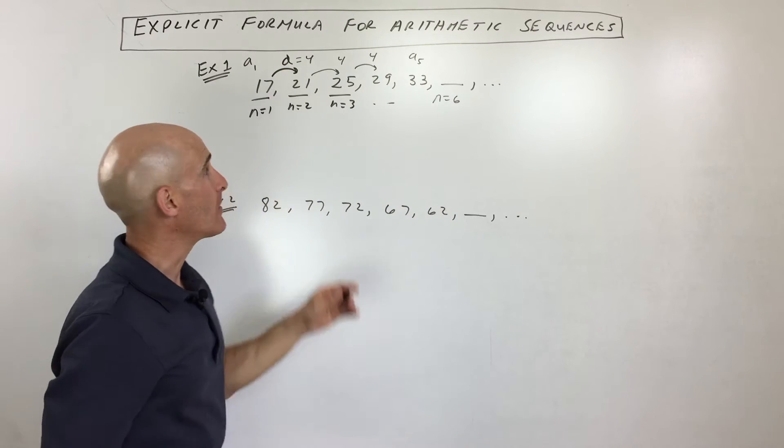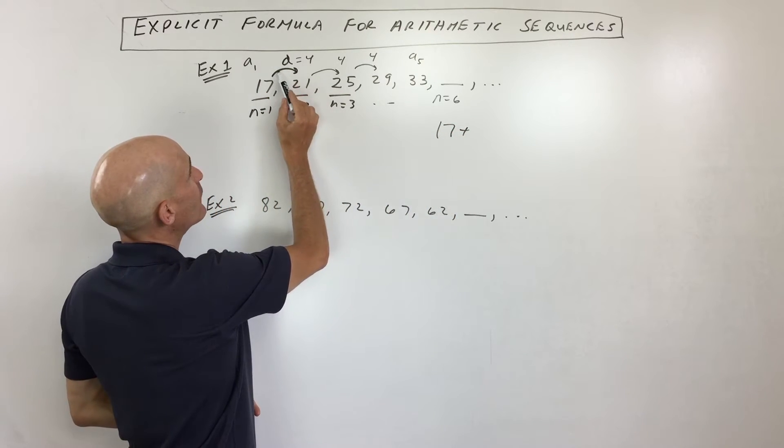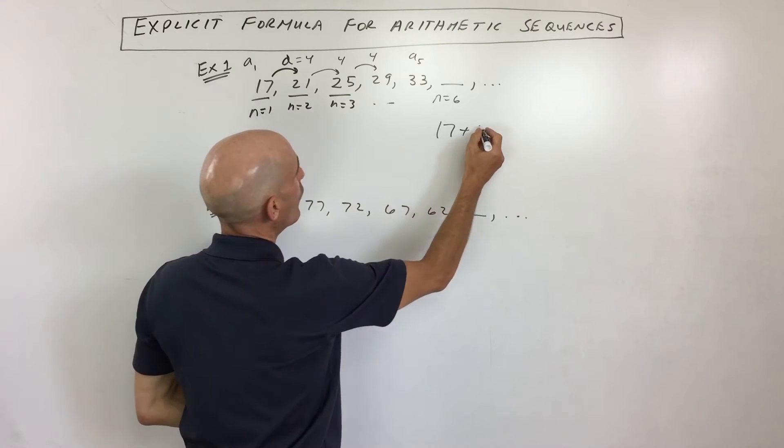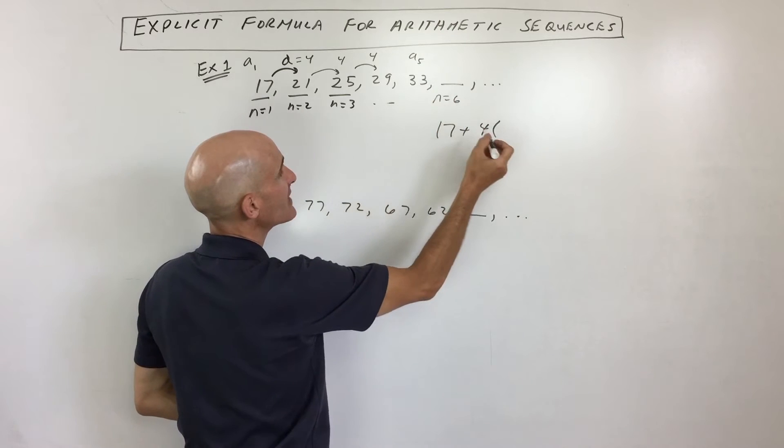How do we get to the 6th term? Well, you start off at 17, right? And then what you do is you add 4. Now, how many times are we adding 4? Well, we're adding 4 once, twice, 3 times, 4 times, 5 times.